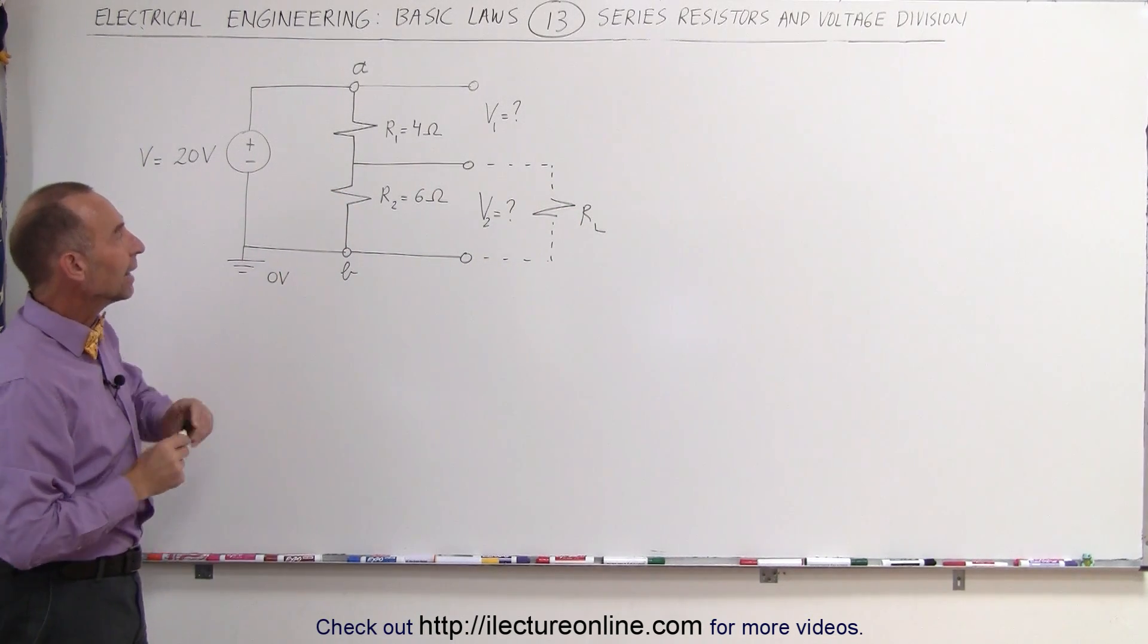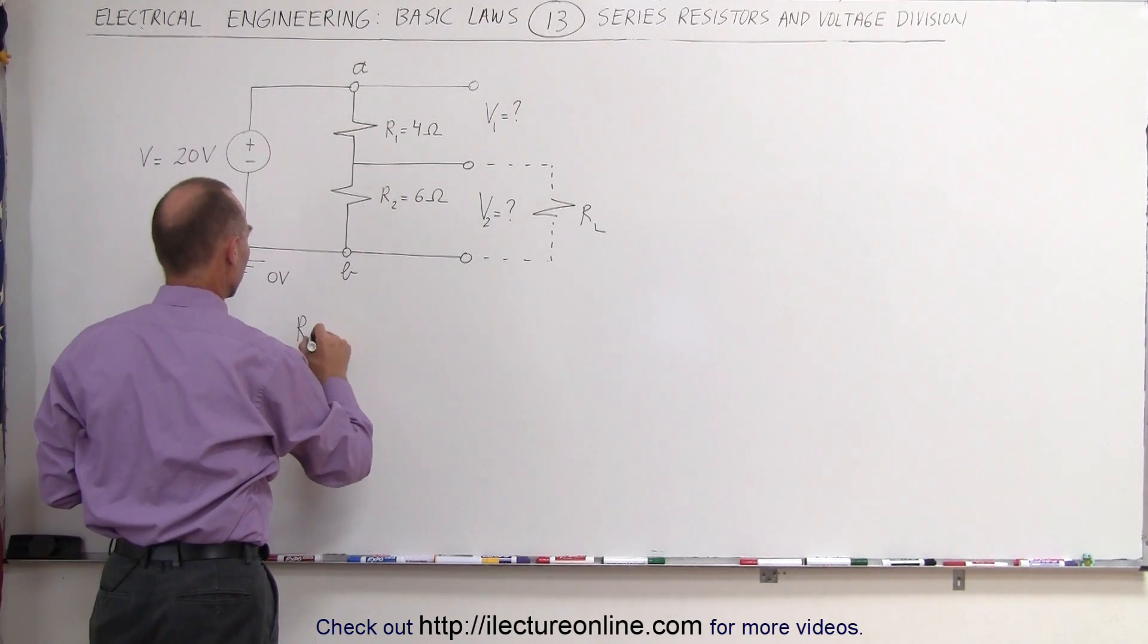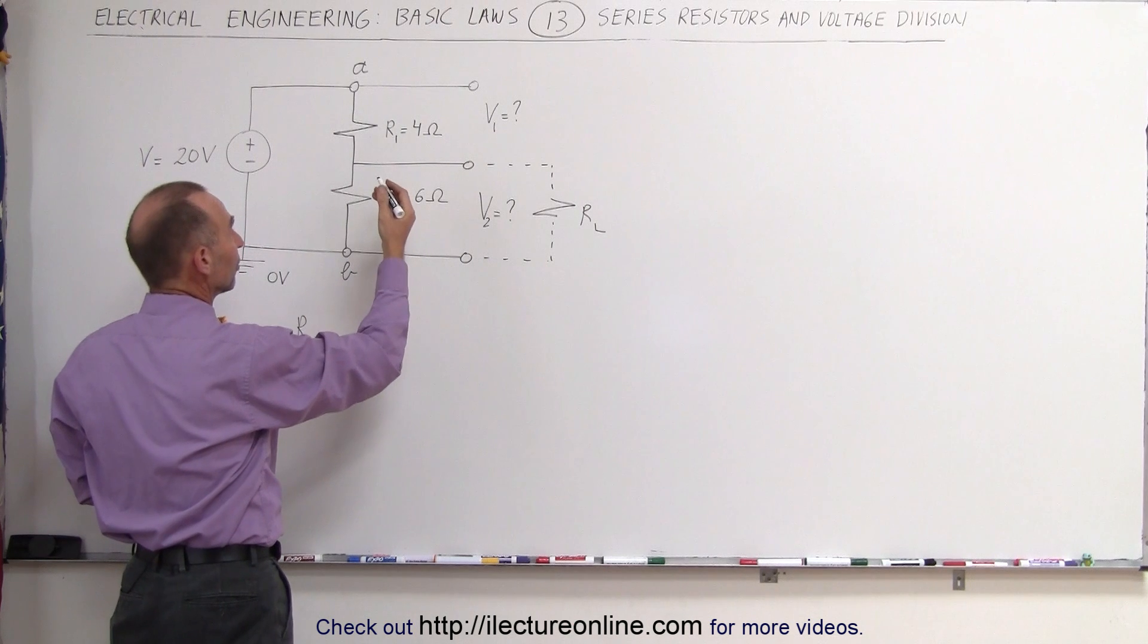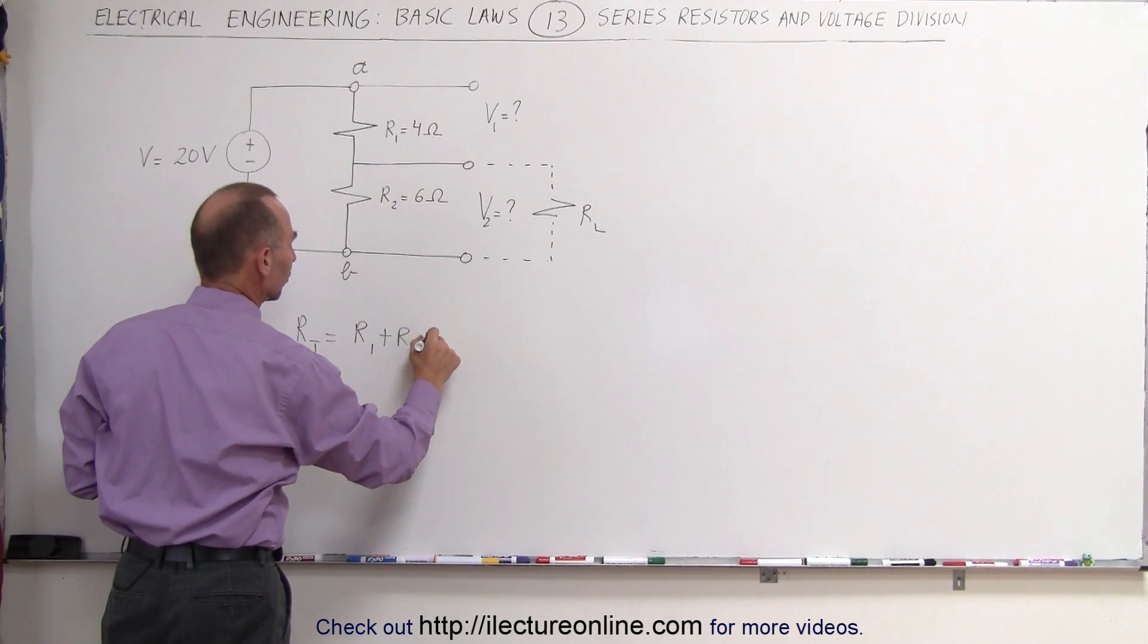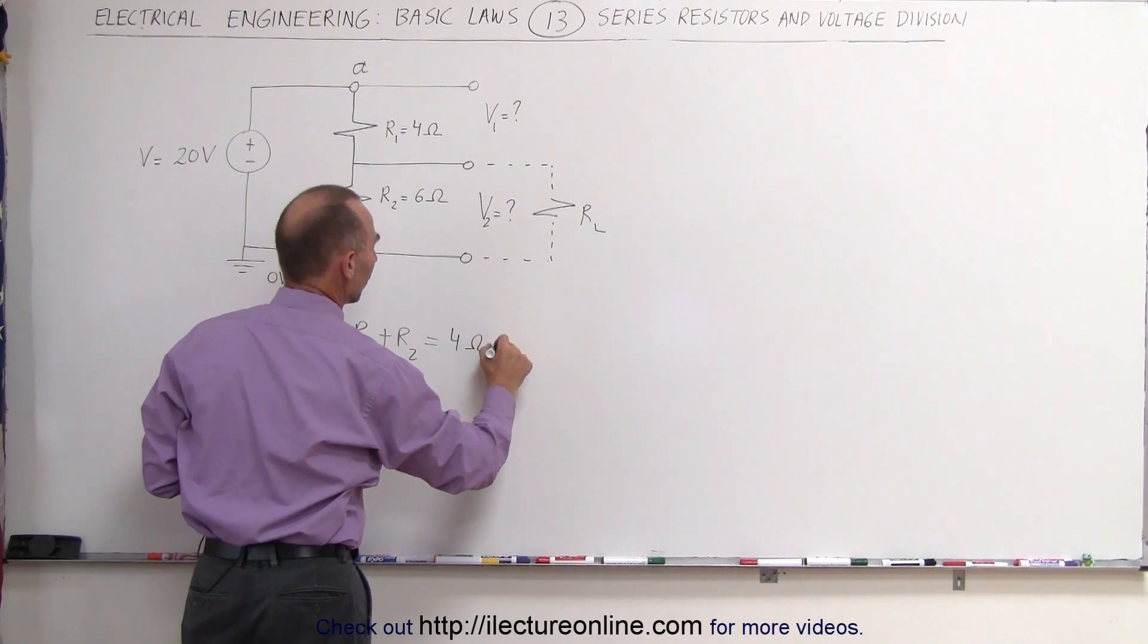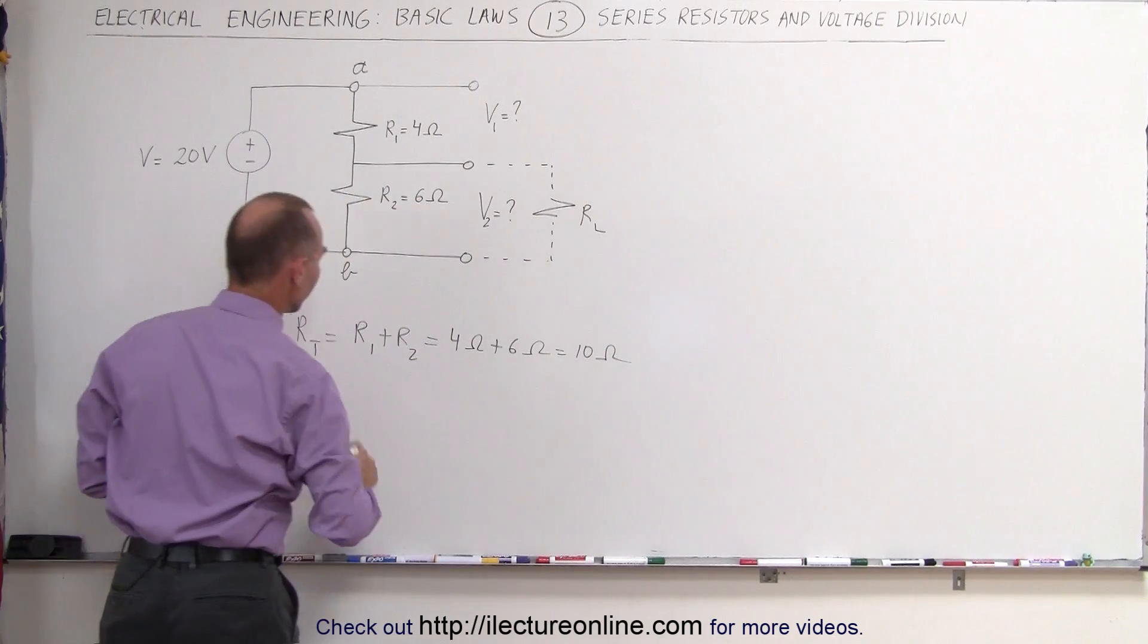The way we do that is we first find the total resistance in the circuit. Our total, in this case since it's a series circuit, is simply the sum of the two resistors, R1 plus R2, which is equal to 4 ohms plus 6 ohms, which is equal to 10 ohms.